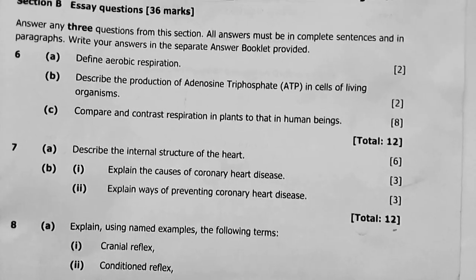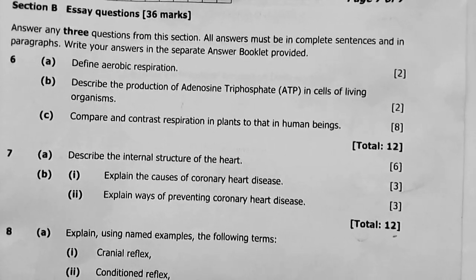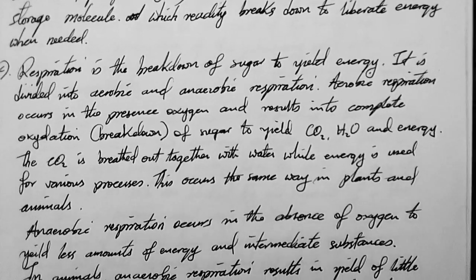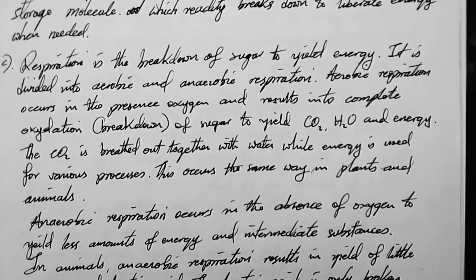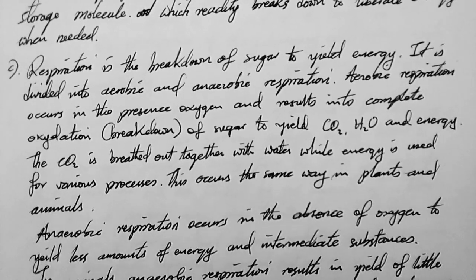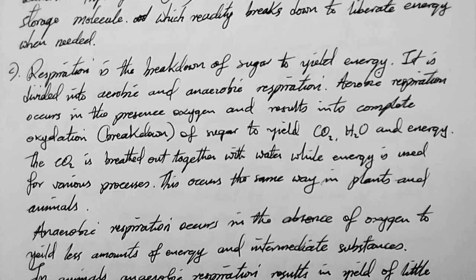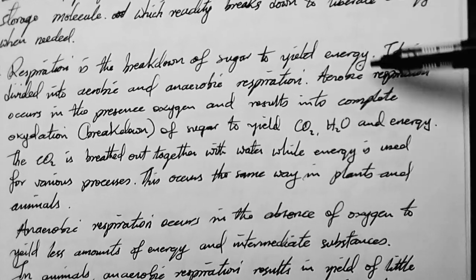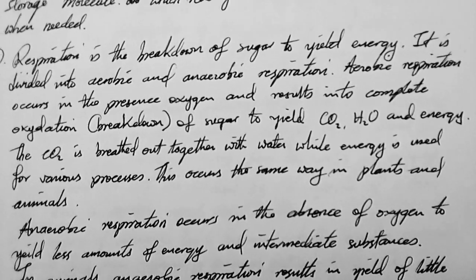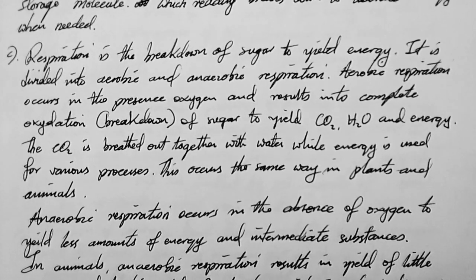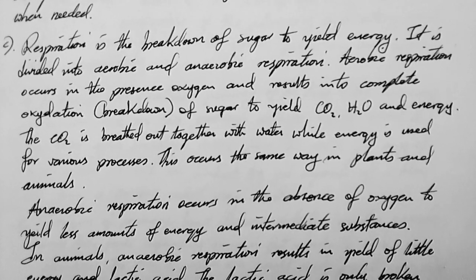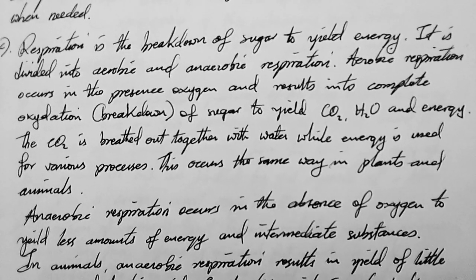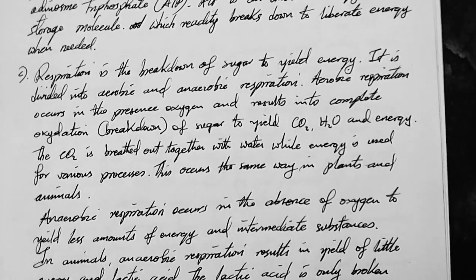Question 6c: compare and contrast respiration in plants to that in human beings. Respiration is a breakdown of sugar to yield energy; it is divided into aerobic and anaerobic respiration. Aerobic respiration occurs in the presence of oxygen and results in complete oxidation of sugar to yield carbon dioxide, water, and energy. The carbon dioxide is breathed out together with water while energy is used for various processes. This occurs the same way in both plants and animals.